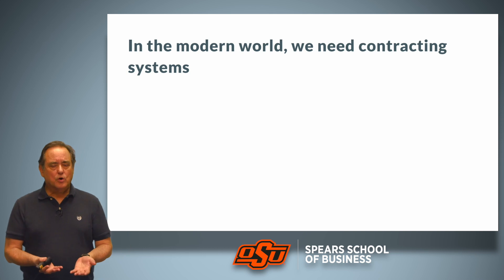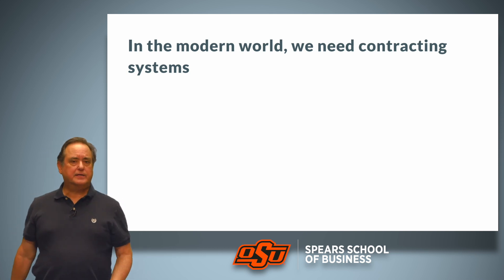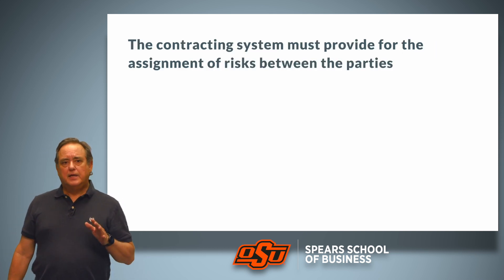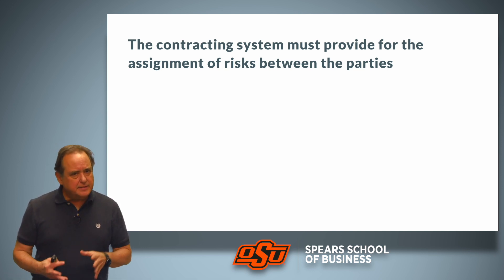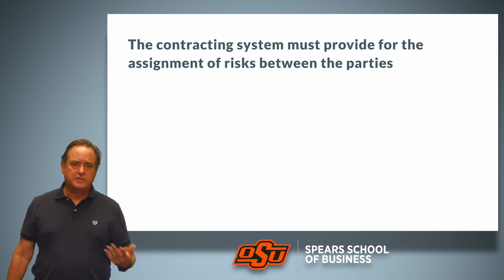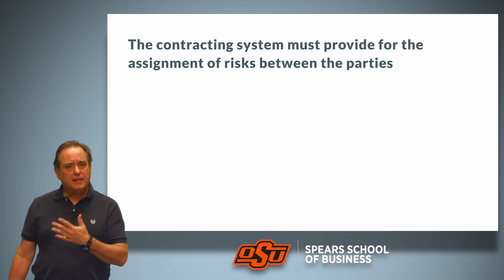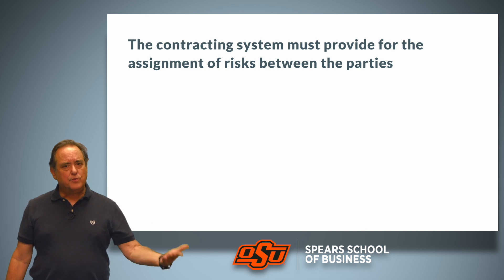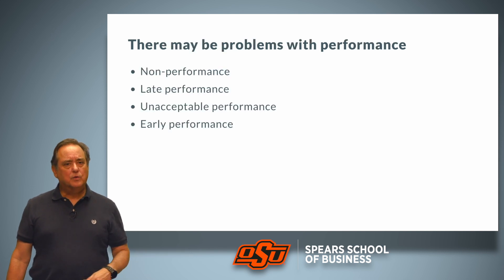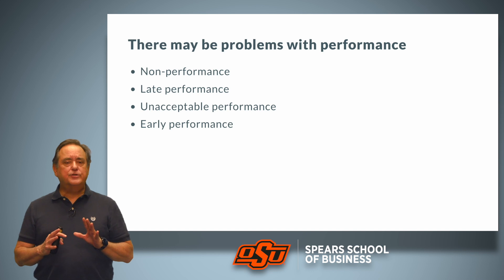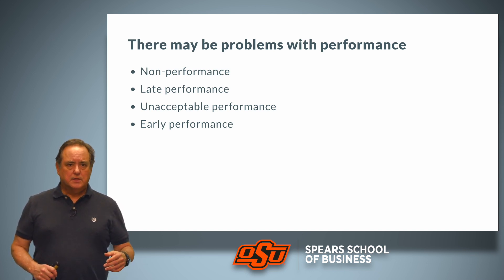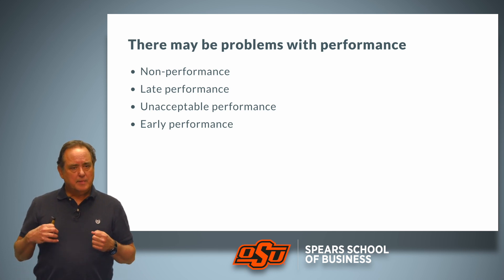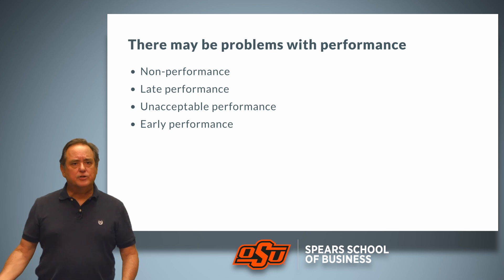In the modern world we need contracting systems, and these contracting systems must provide for the ability to assign and allocate risks between the parties. The first category is problems with performance. The top problem with performance would be non-performance — for a seller, that means a failure to ship the goods.